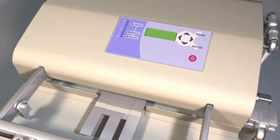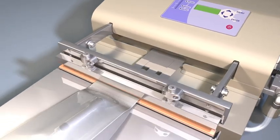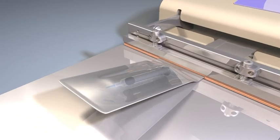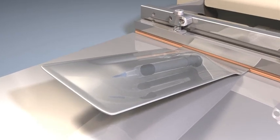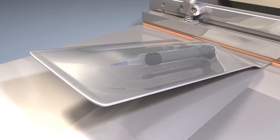The operator simply activates the foot switch, and the sealer will pull a vacuum to the unit's pre-programmed value. Once this environment is achieved, it will automatically withdraw the vacuum nozzle and begin the sealing process.